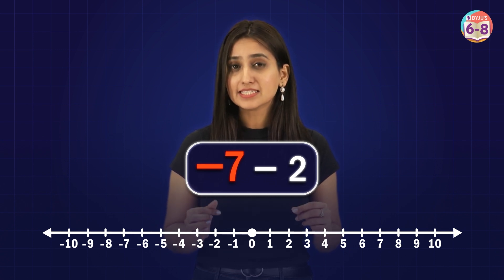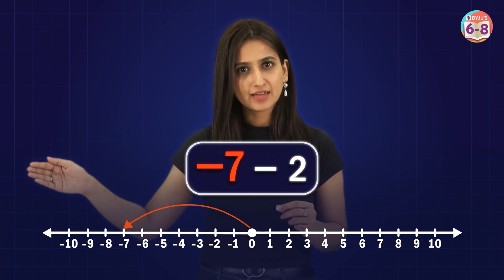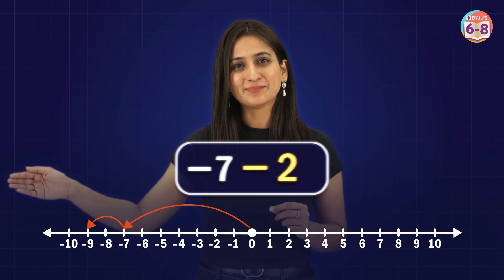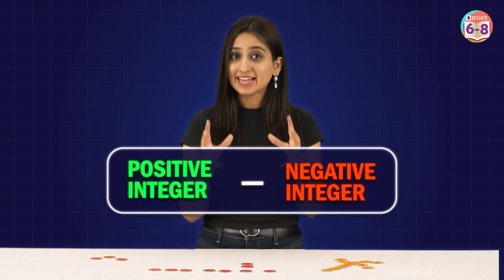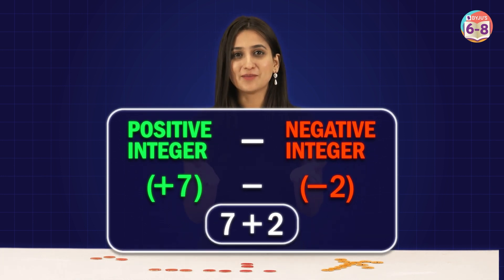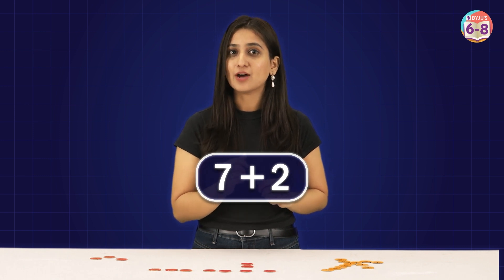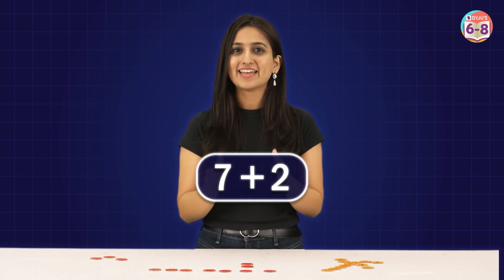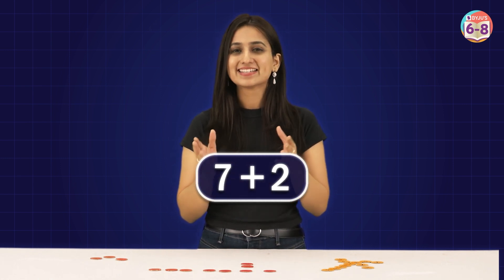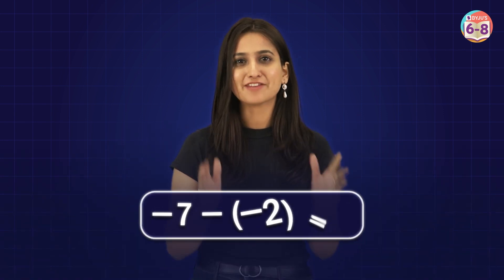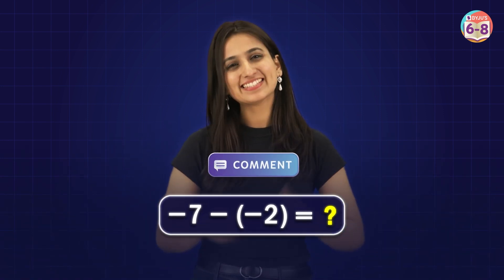Now if you look closely — when you're subtracting a negative number, like seven minus of minus two, you are technically adding the two numbers. So whenever you encounter a minus sign before a negative integer, change the sign to plus. So seven minus minus two is nothing but seven plus two, which is nine. Here's a question for you: what is minus seven minus of minus two? Comment below and stay tuned!